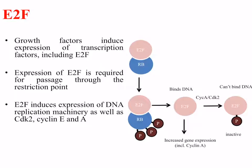E2F is generally bound to something called RB, which is a negative inhibitor of E2F. With RB attached to it, E2F as a transcription factor cannot drive transcription or increase cyclin transcription. In order for the cell cycle to proceed, you need to get rid of RB. Phosphorylation of RB causes the RB protein to detach from E2F, leaving the E2F molecule free to move to distinct promoter regions — in particular those of the cyclins — and promote their transcription.